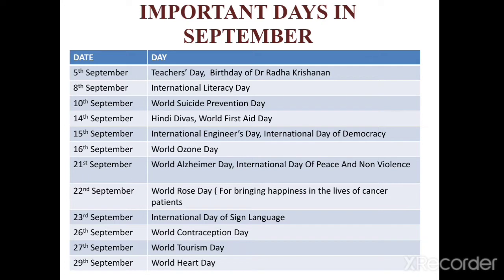Important days in September: 5th of September, as we all know, is Teacher's Day, on the birth anniversary of Dr. Radhakrishnan. 8th of September is International Literacy Day. 10th of September is World Suicide Prevention Day. 14th of September is Hindi Divas and also World First Aid Day. 15th of September is International Engineers Day and also International Day of Democracy. 16th of September is World Ozone Day.